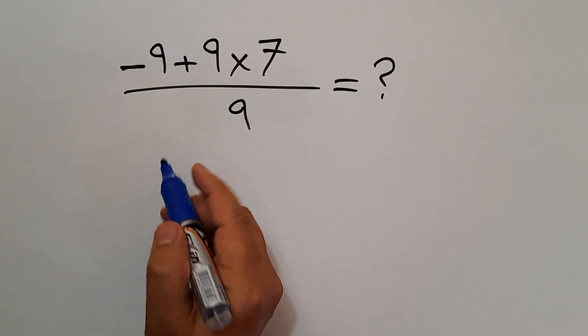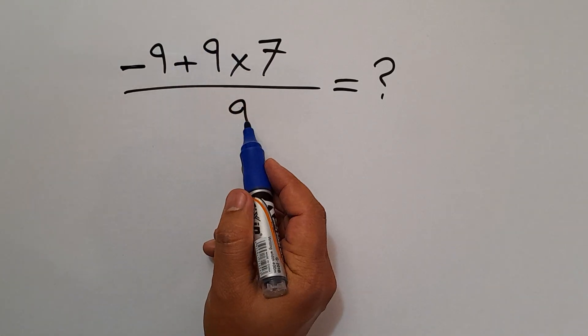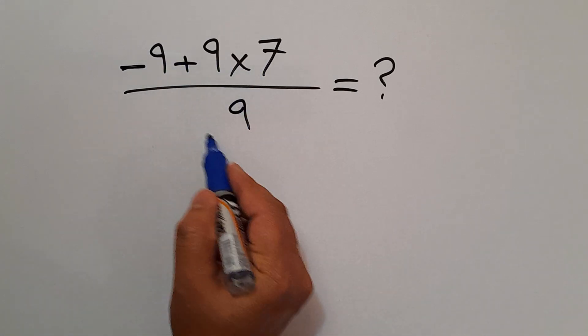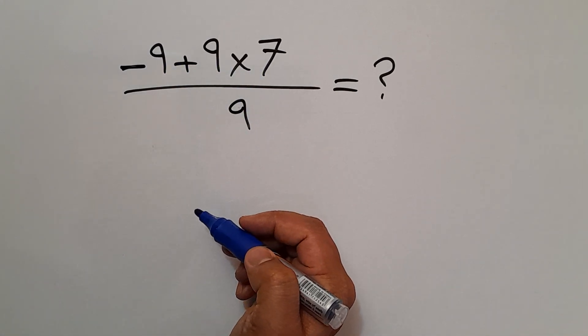Hi everyone and welcome to this video. In this video we want to find the value of this fraction, negative 9 plus 9 times 7 over 9. Are you ready to solve? Let's go and get started.